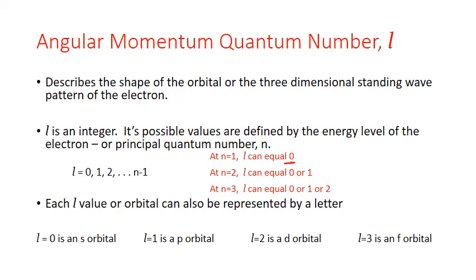To avoid confusion between the principal and angular momentum quantum numbers, we often represent the orbital shape using letters instead of numbers. Each L value has an associated letter: L equals 0 is known as an S orbital, L equals 1 is associated with the P orbital, L equals 2 is a D orbital, and L equals 3 is an F orbital. In the known elements today, these are the four different orbital shapes that are found, though theoretically more are possible.